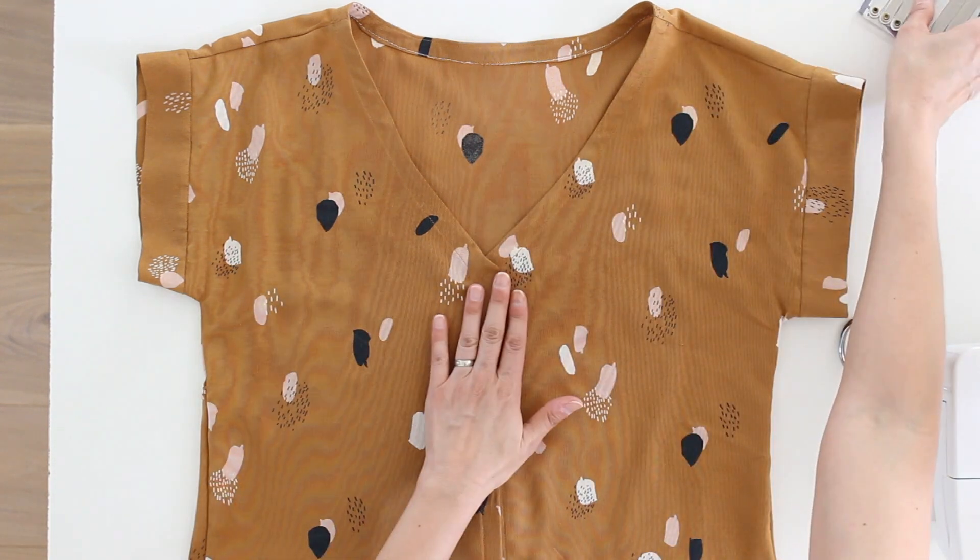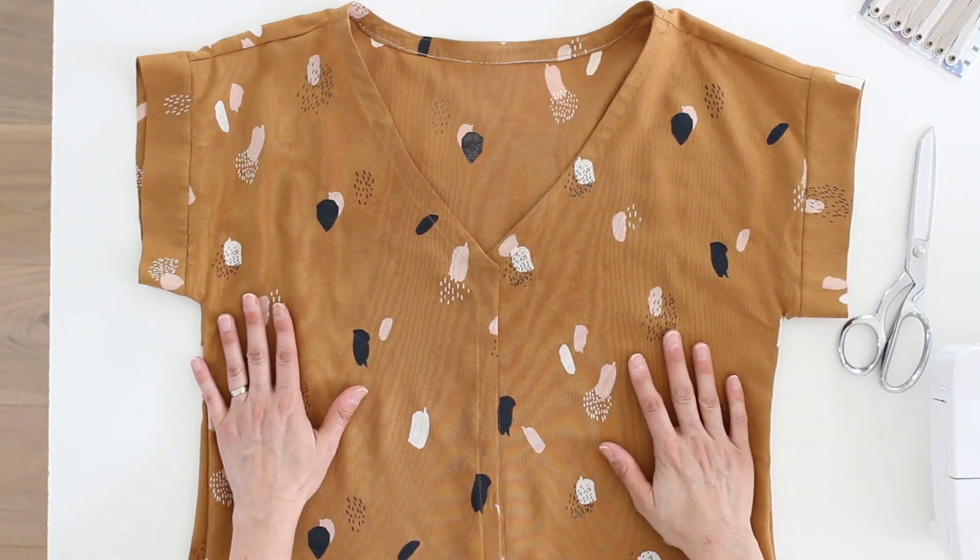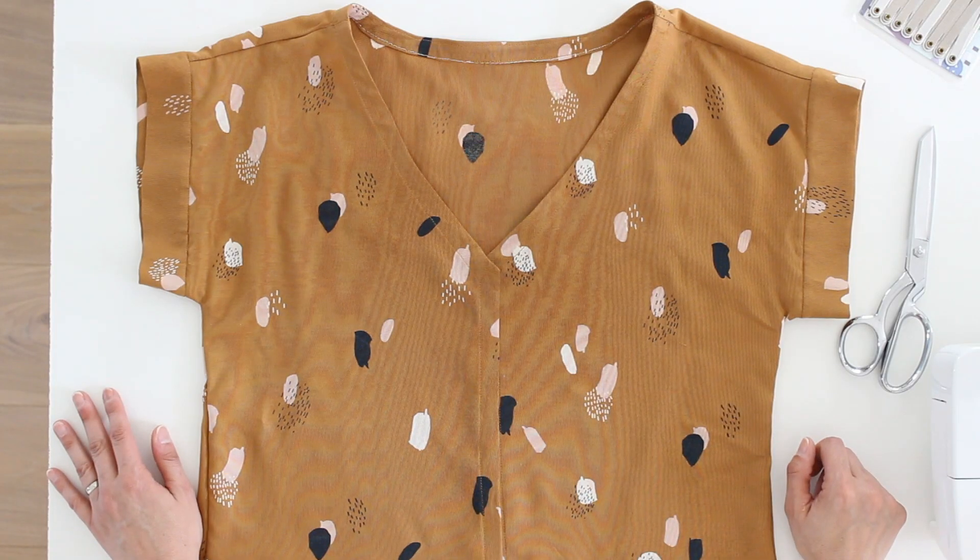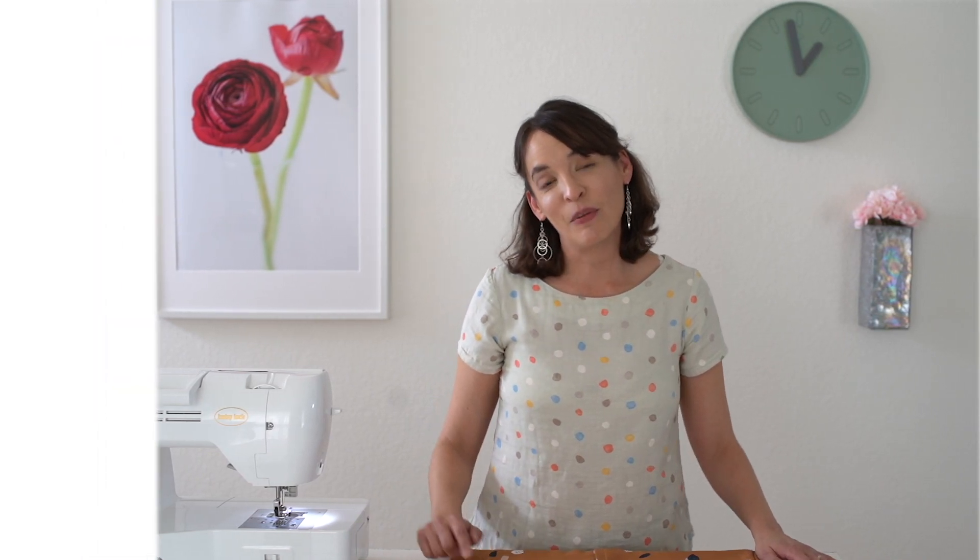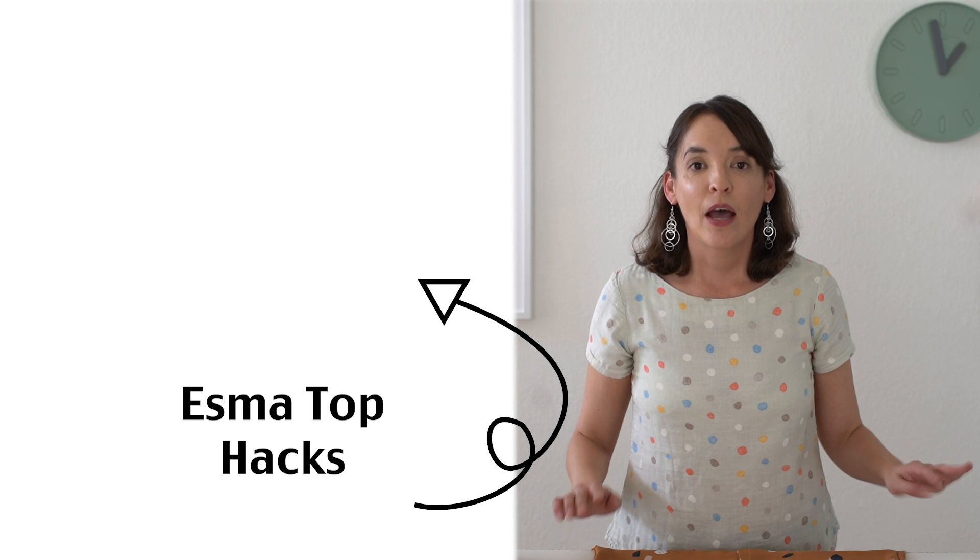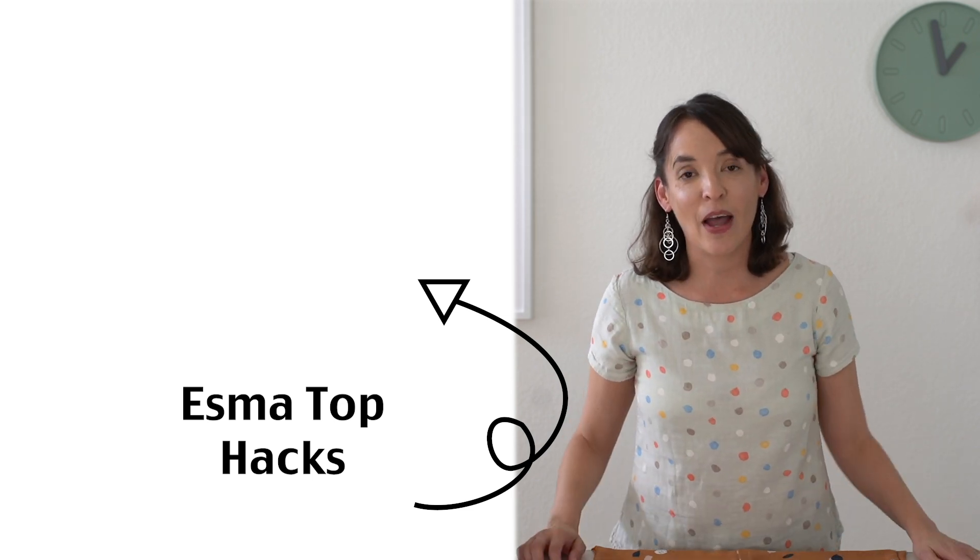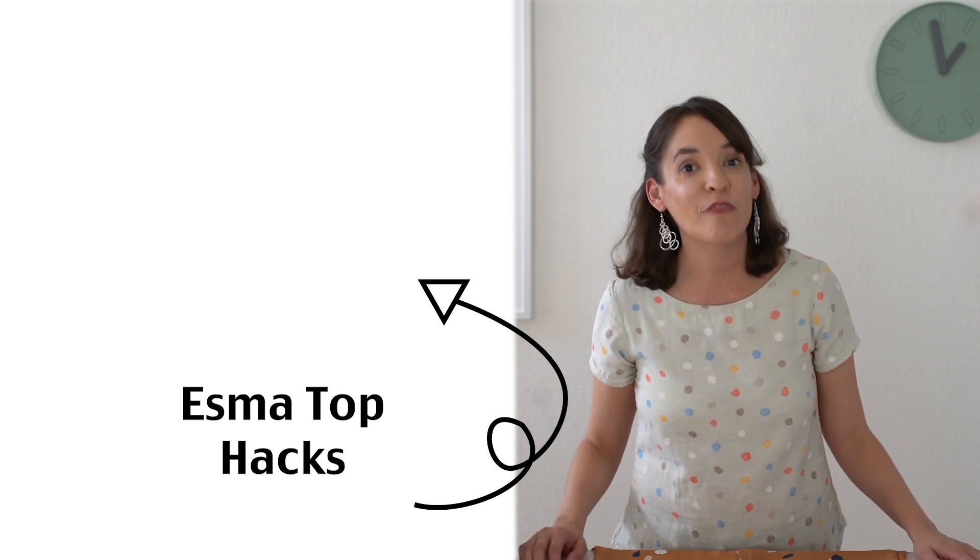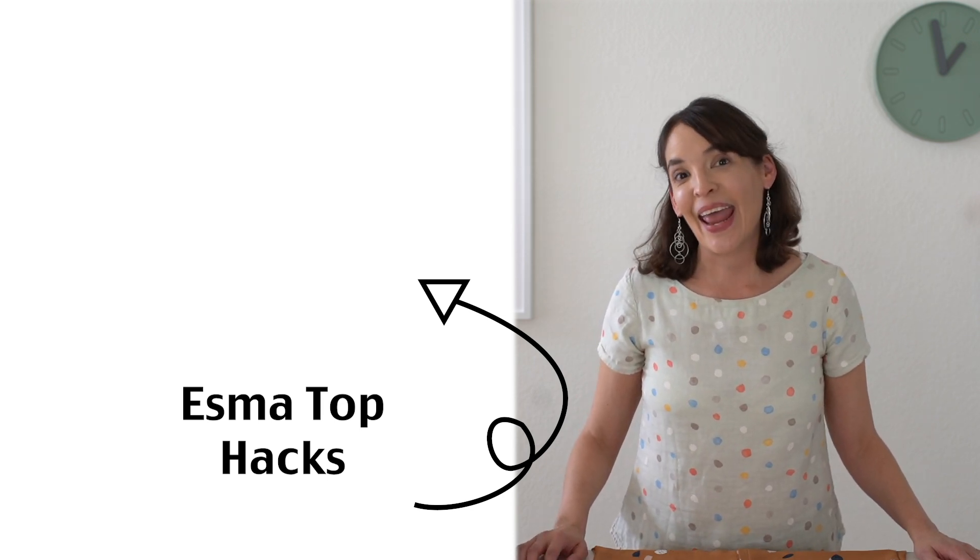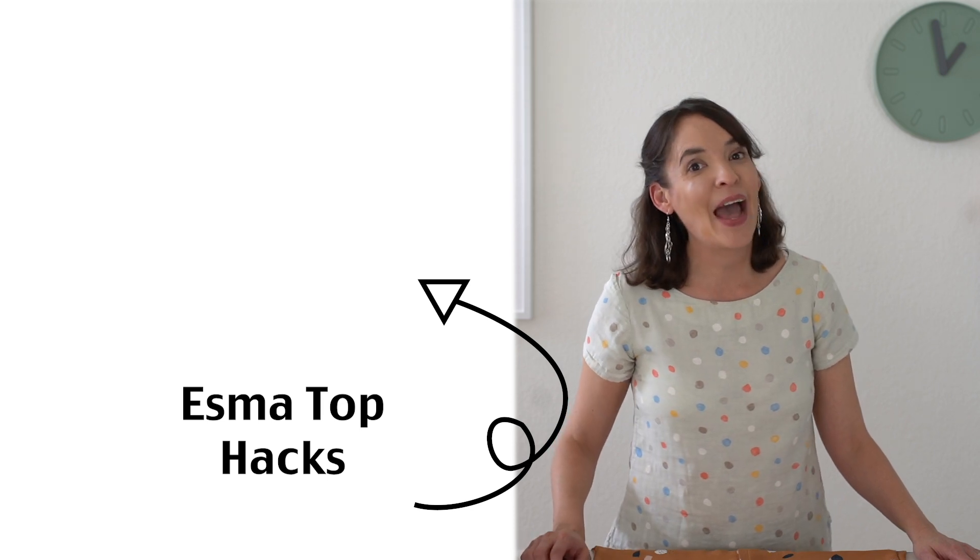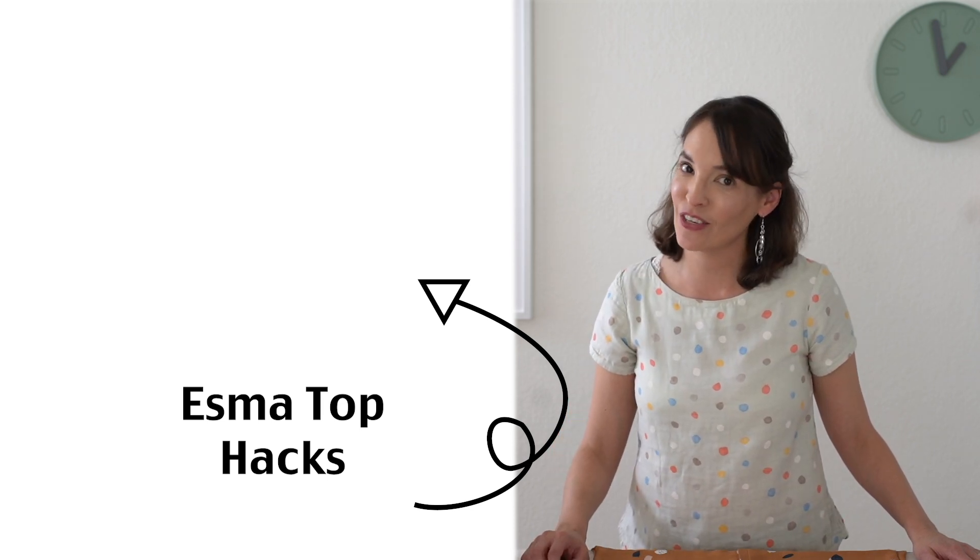As far as stitching the buttonholes and the buttons, I've got some other resources linked below, so make sure to check that out. Once you have that done, then you're done with your project. Make sure to check out some of the other Esma hacks that I have going on this month. I show you how to change a neckline, and then this week we talked about how to add buttons to a shirt that didn't have buttons to begin with. And next week I'm going to be showing you how to make a dress out of this shirt pattern.